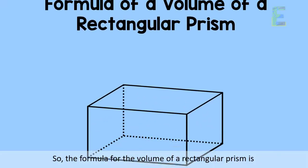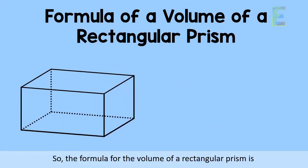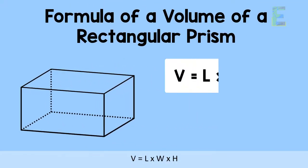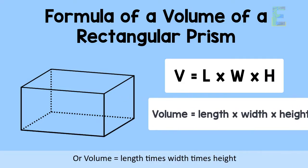So the formula of a volume of a rectangular prism is V equals L times W times H, or volume equals length times the width times the height.